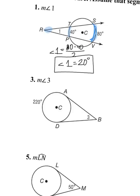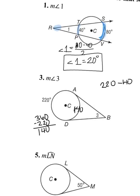Number three — it is still large arc minus small arc divided by two. But there's no number for the small arc. We know the whole circle is 360, and these are two tangent lines not cutting through the circle. To find arc AD, do 360 minus 220, so that smaller arc is 140. Then large arc minus small arc divided by two equals the exterior angle, so angle three equals 40 degrees.